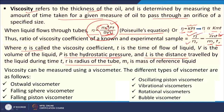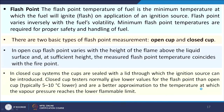Viscosity can be measured by different methods using viscometers: Ostwald viscometer, falling sphere viscometer, falling piston viscometer, oscillating piston viscometer, vibrational viscometers, rotational viscometers, and bubble viscometer.